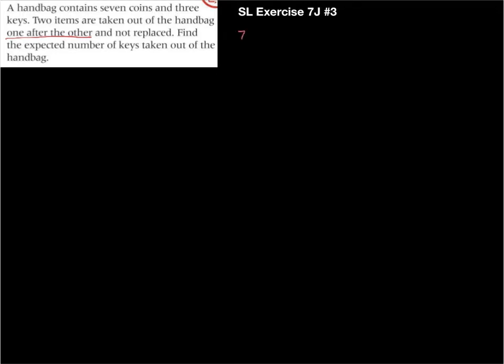Alright, so we've got here seven coins and three keys. Now I'm pulling out of the bag twice. This to me seems like a very good situation for a tree diagram. Now I'm going to label these. The question is expected number of keys, so the keys I'm going to label as K, and the coins I'm going to label as not K, because that's all that's important right now.